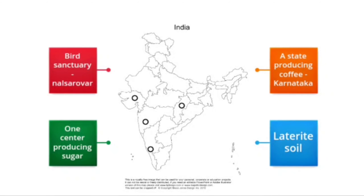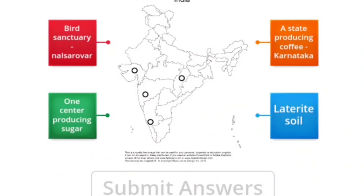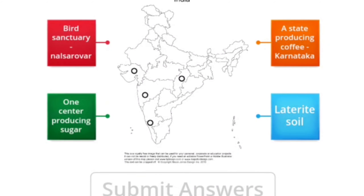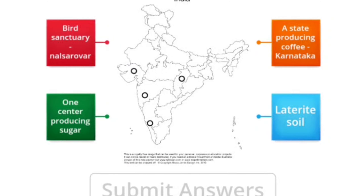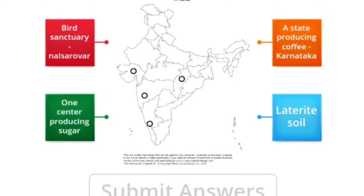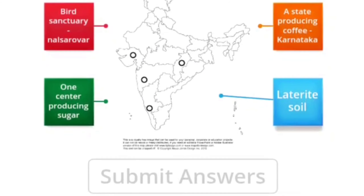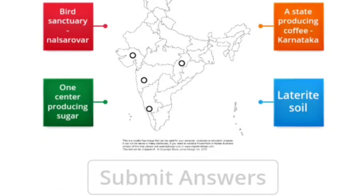Number one is laterite soil. Do you know where laterite soil is located in India? The answer is: laterite soil is found in the state of Chhattisgarh. So we have to drag this point and deliver it to Chhattisgarh on the map.